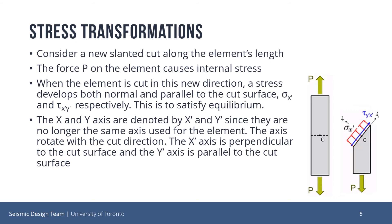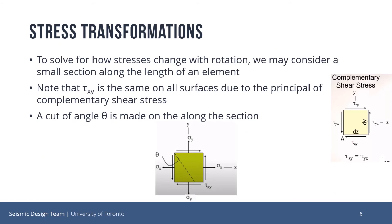However, this is not always the case for all cuts. Consider a new cut along the element's length, which is no longer perpendicular to the force direction. The force P on the element causes internal stress the same as before. However, rather than there being solely a normal stress, there is also a shear stress, denoted by tau xy. This is to satisfy equilibrium, as without the shear stress, the normal stress would create an unbalanced force acting in the y direction. We change the x and y-axis to reflect this cut. The x-axis is perpendicular to the cut surface and is denoted by x-prime. The y-axis is parallel to the cut surface and is denoted by y-prime. We must also denote the normal stress and shear stress to reflect this axis change. The new normal stress is denoted by sigma x-prime and the new shear stress is denoted by tau xy-prime. These normal and shear stresses change as the element or cut is rotated, as we will see.